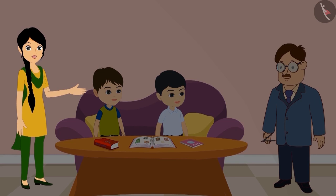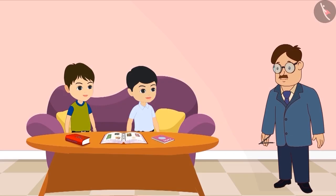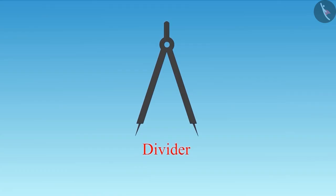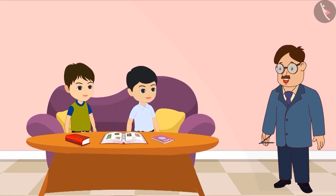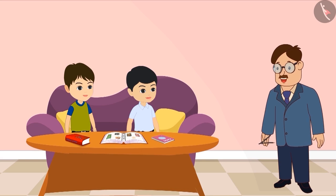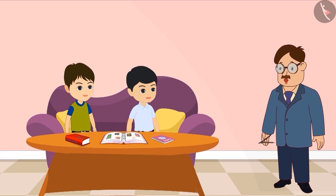Their uncle showed them a strange object. Children, do you know what this is? This is called a divider. With its help, we can find out whether an angle is a right angle, greater than a right angle or smaller than a right angle.